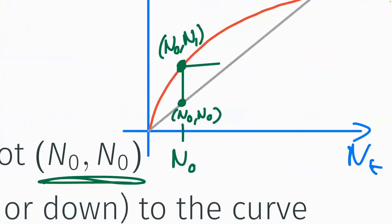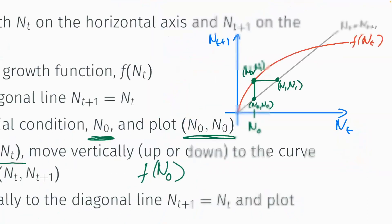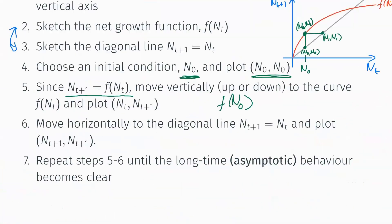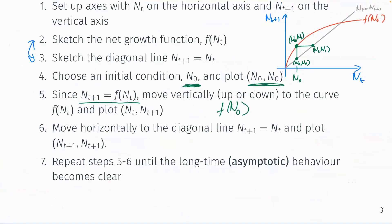We then move horizontally to the diagonal line. The point we land on is (n1, n1). Then we repeat the process — going vertically to the curve and horizontally to the diagonal — until the long-term asymptotic behavior becomes clear. Asymptotic means what happens as t tends towards infinity.